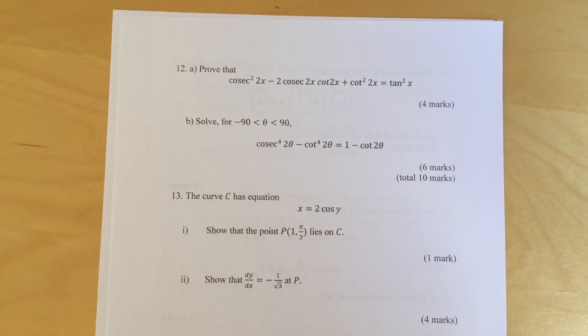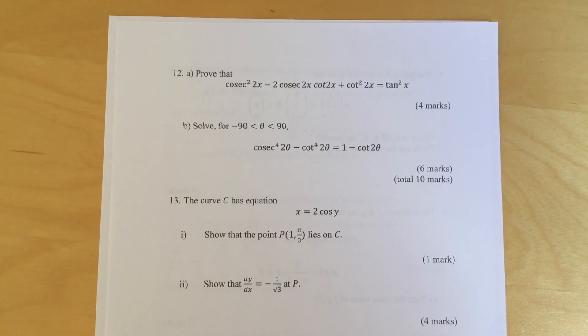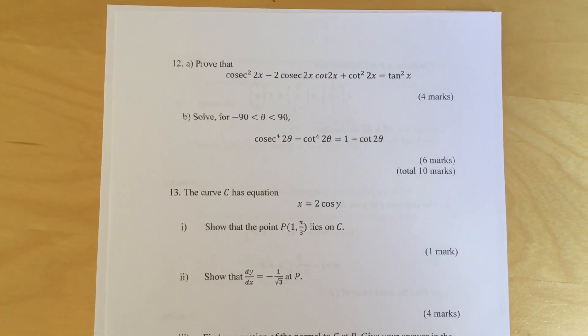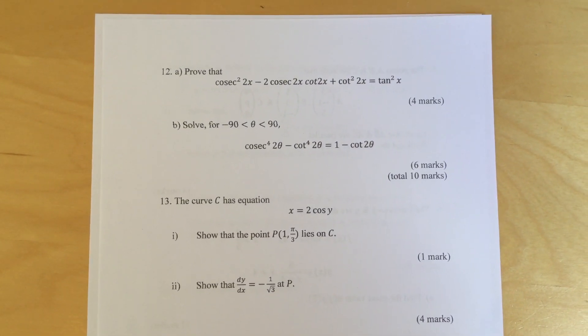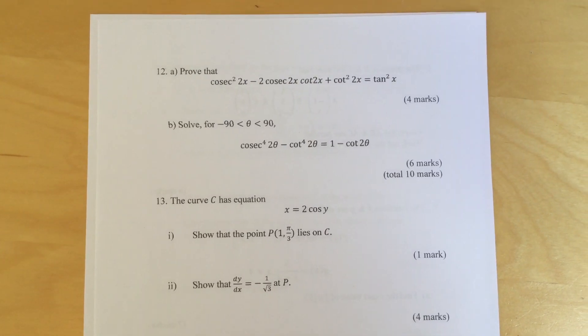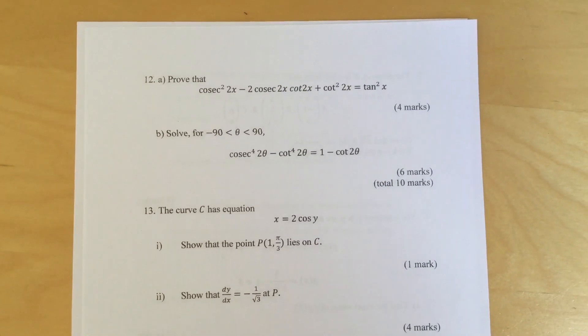Part b: Solve for theta between minus 90 and 90 cos squared 2 theta minus cot to the power 4 2 theta equals 1 minus cot 2 theta.